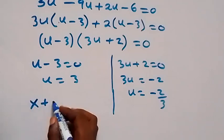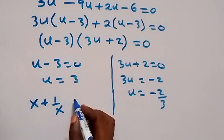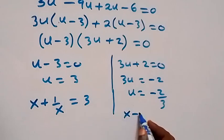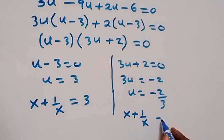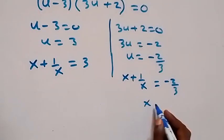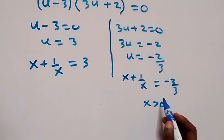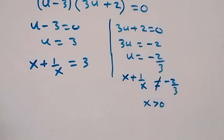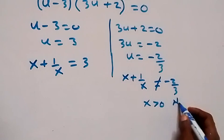Recalling that u equals x plus 1 over x, we have two cases: x plus 1 over x equals 3, and x plus 1 over x equals minus 2 over 3. Since we said x must be greater than 0, the case x plus 1 over x equals minus 2 over 3 is not possible, so we discard it.